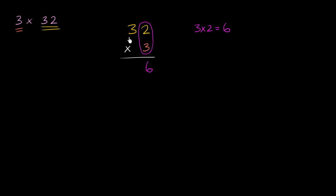Now we're going to figure out what 3 times 3 is. Well, once again, we know that 3 times 3 is 9. And since I'm multiplying times the tens place right over here, I'm going to put it in the tens place right like this.